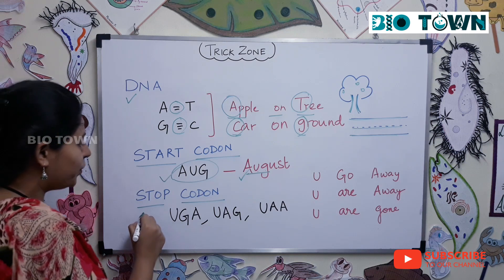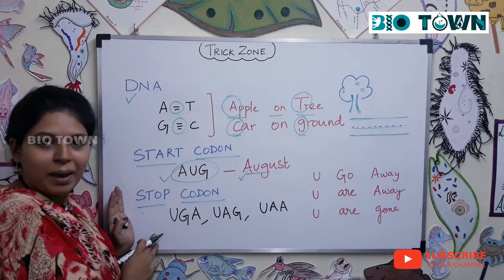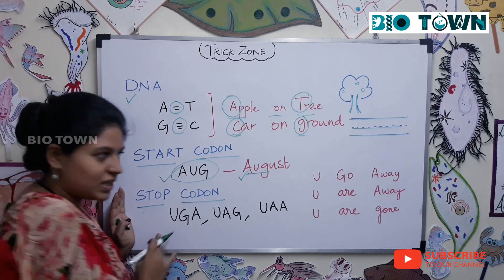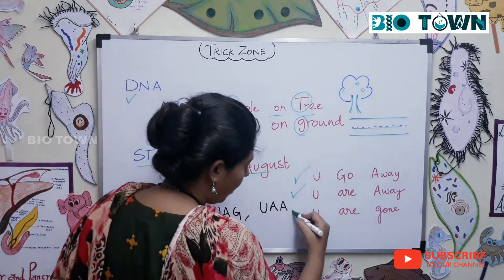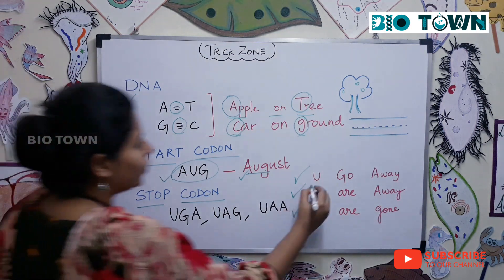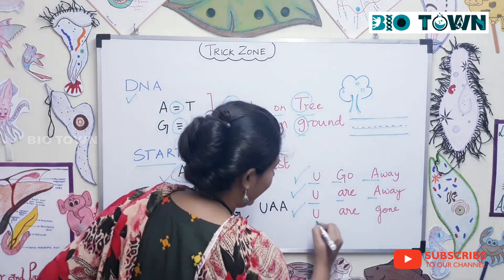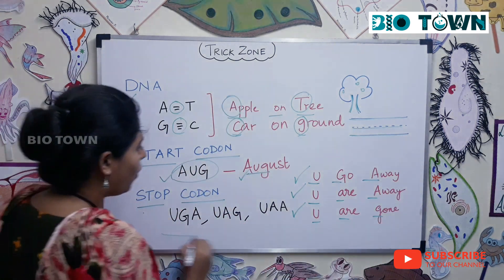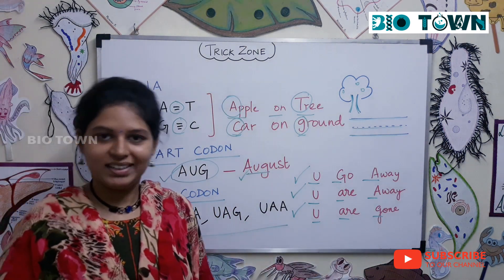Now stop codon — it's a very famous trick. Remember an annoying person. How would you say? 'You go away, you are away, and you are gone.' So UGA, UAA, UAG — all three are stop codons. Thank you.